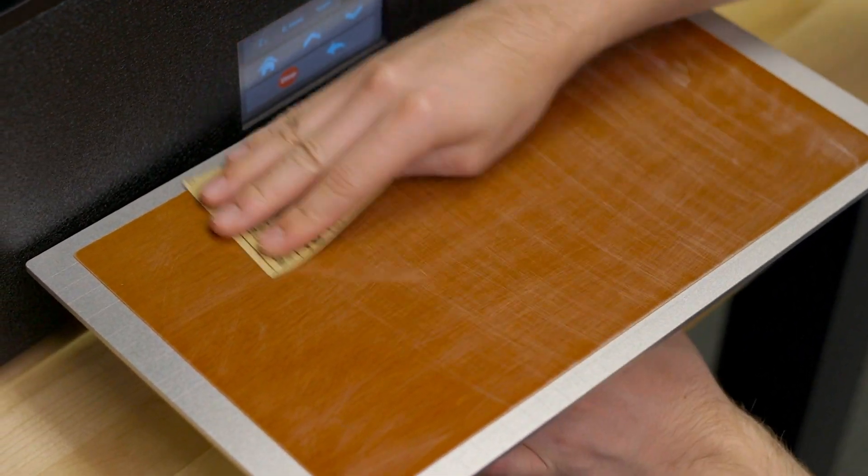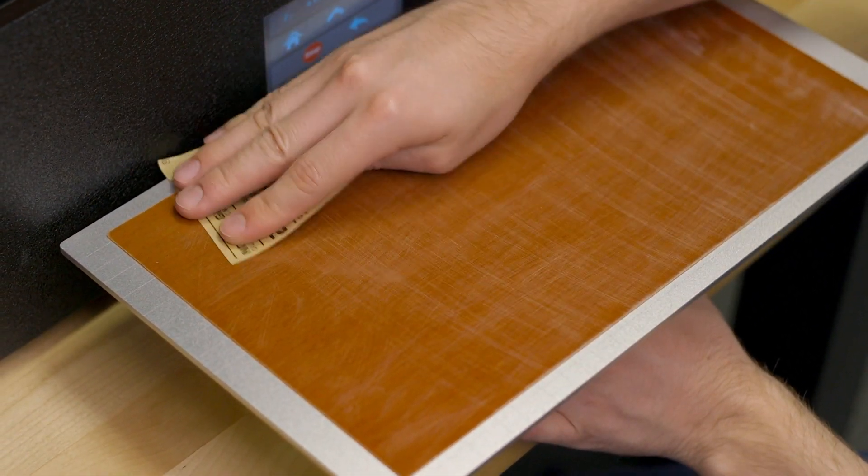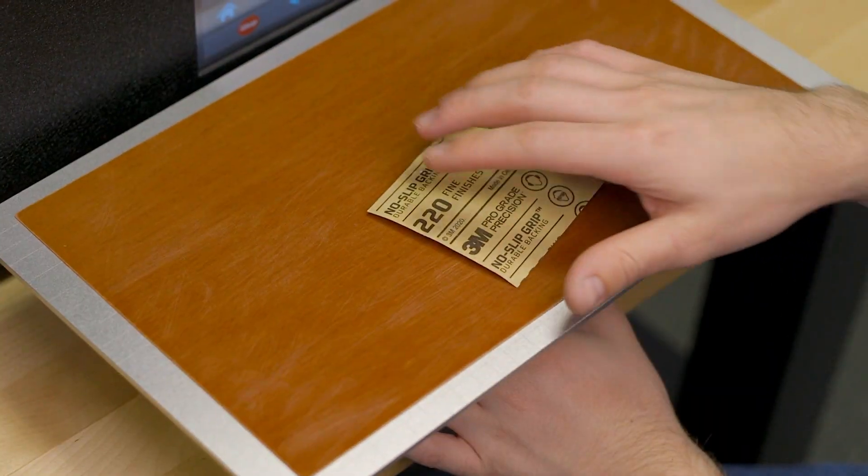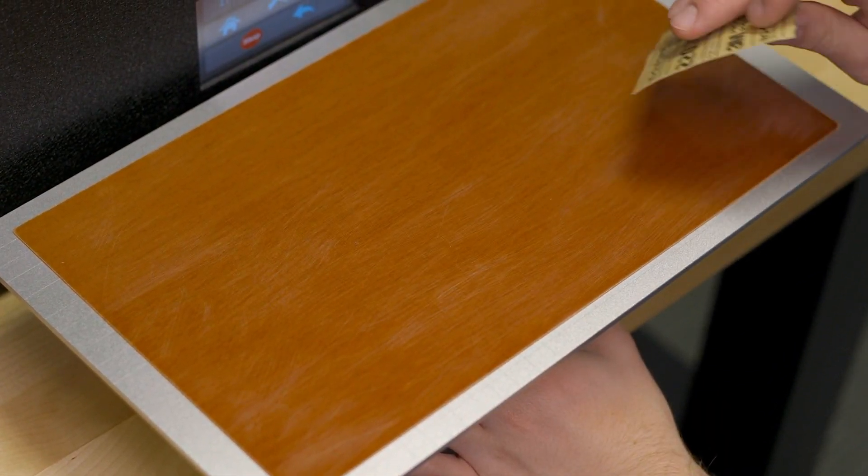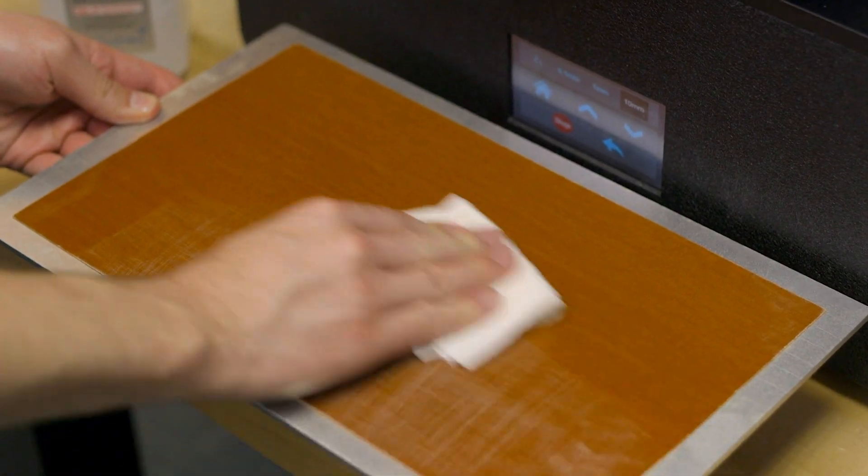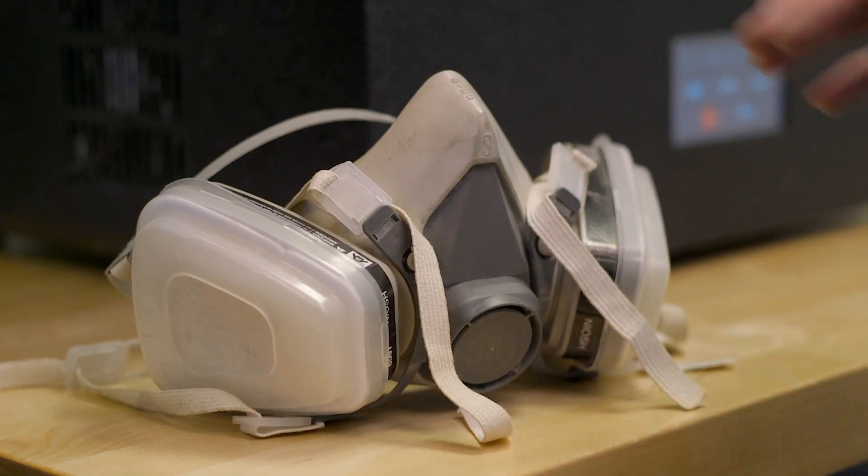If you find bed adhesion has been diminishing over time, you can easily refresh it by giving the entire surface a light sanding with the included 220 grit sandpaper. Just be sure to clean the build plate before and after sanding, and avoid breathing in the dust particles by wearing a dust mask or respirator.